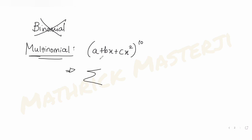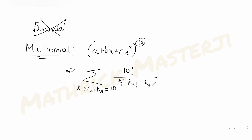The multinomial theorem tells us that for three constants k1, k2, k3 (corresponding to a, bx, and cx²), the sum k1 + k2 + k3 must equal the power, which is 10. The formula gives us 10 factorial over (k1! · k2! · k3!), multiplied by a raised to k1, times (bx) raised to k2, times (cx²) raised to k3. This is the entire expansion.